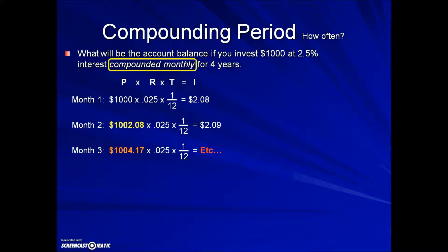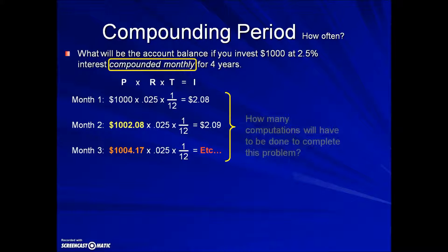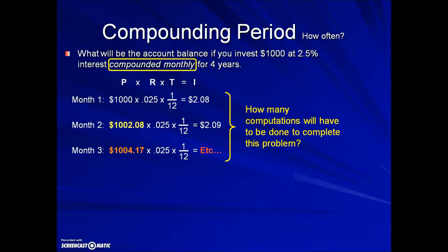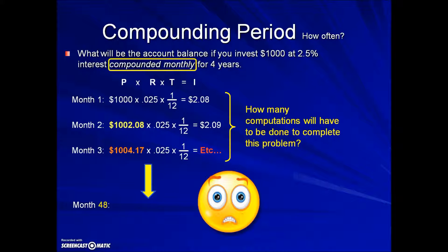This is a four-year term, which means there are many computations to continue if we're going to use the simple interest method. In fact, there would be twelve calculations per year over four years, amounting to forty-eight calculations total. That's a lot, so we're going to introduce the compound interest formula in the next section.